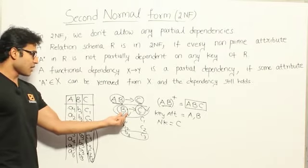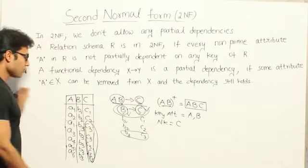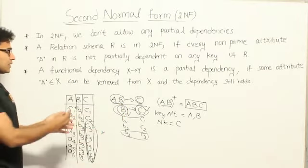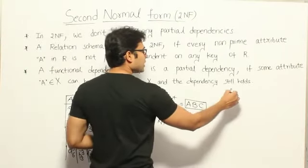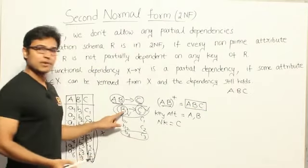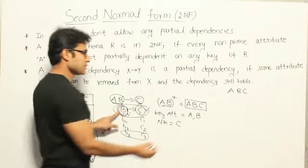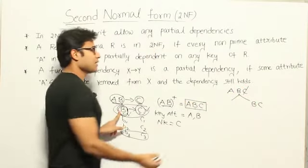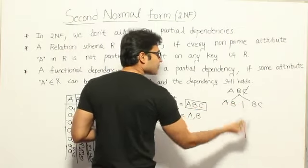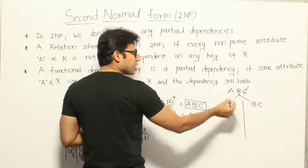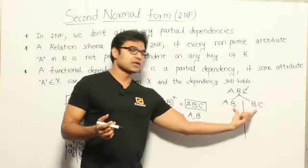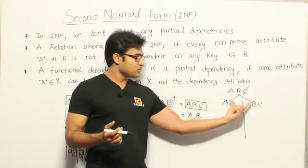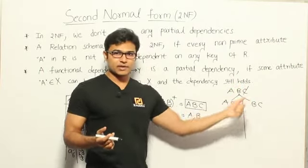What is partial dependency? C is depending on part of the key. Whenever you see such redundancy caused by a partial dependency, you can eliminate it by making it a separate table — that is called decomposition. If table ABC has a partial dependency, find the closure of the left-hand side: B-plus gives BC. So take B and C out into a separate table, and keep AB in one table. When decomposing, always maintain a common attribute, and the best practice is to keep the entire candidate key in one table and the part of it in the other. The intersection should be a key in one of the tables — that is called lossless decomposition.